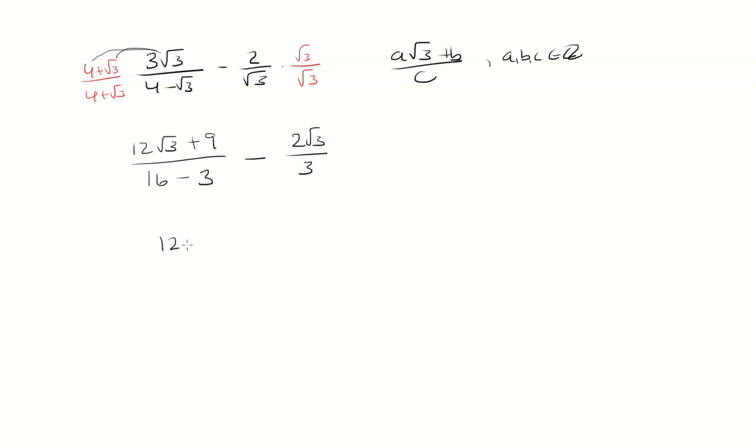So we'll simplify, it's 12√3 plus 9 over 13, minus 2√3 over 3.